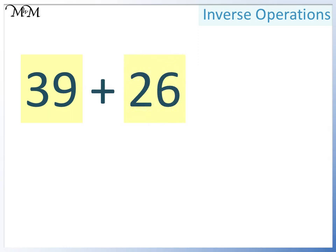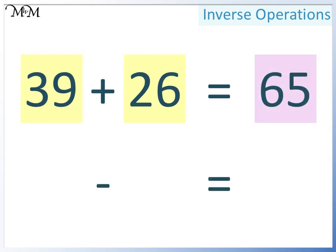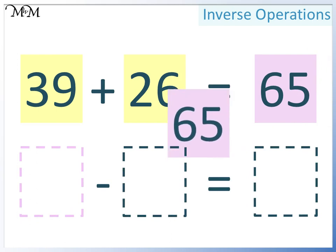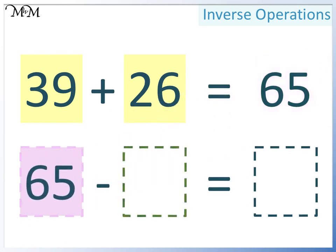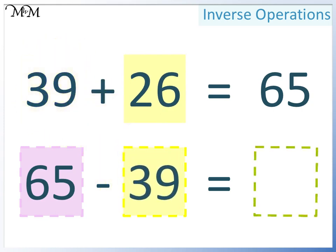Here we have 39 plus 26 equals 65. Two smaller numbers add together to make a larger number. We want to write this as a subtraction calculation. The largest number must go at the start, followed by either of the two smaller numbers. We'll start with 39. In the final space we'll write 26.